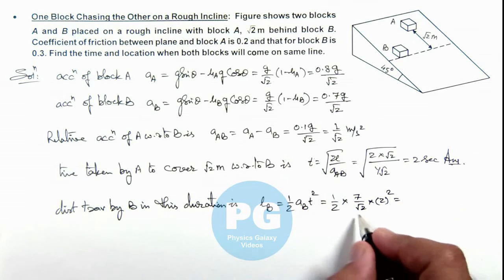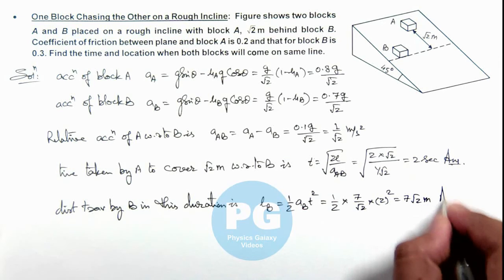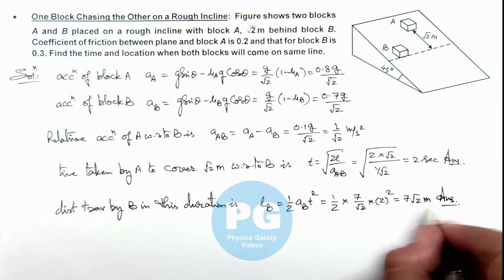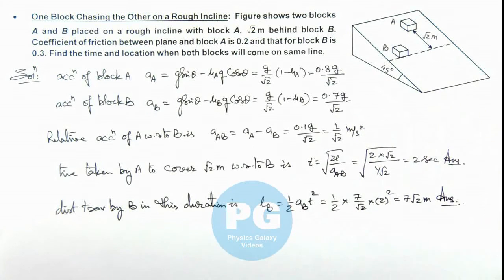So on simplifying, we are getting the value 7√2 meter, that is another answer to this problem. And this is the distance from the initial position of B where both the blocks will come on the same line.